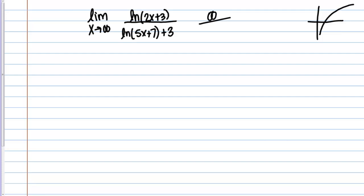What about on the bottom? I have the same sort of situation. The natural log of 5x plus 7, if I plug in infinity, I'm going to get the natural log of infinity, which is infinity. Then I have plus 3, but still infinity.